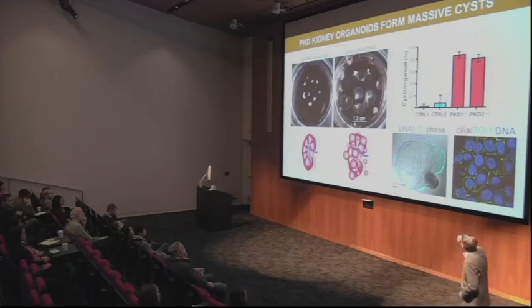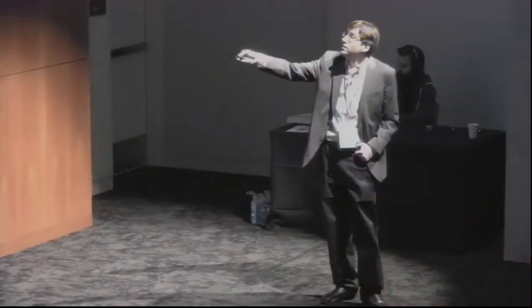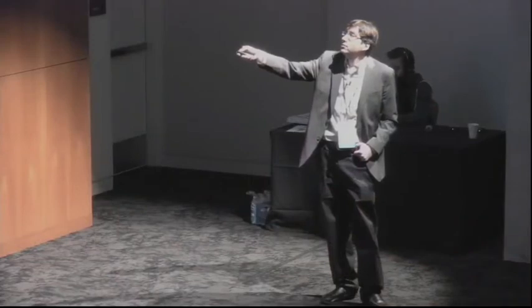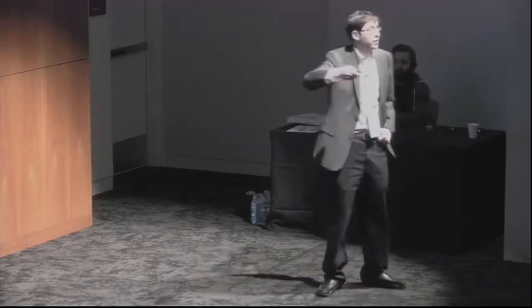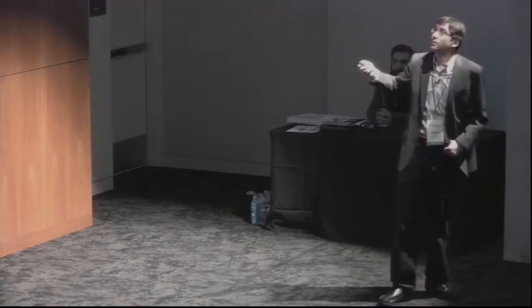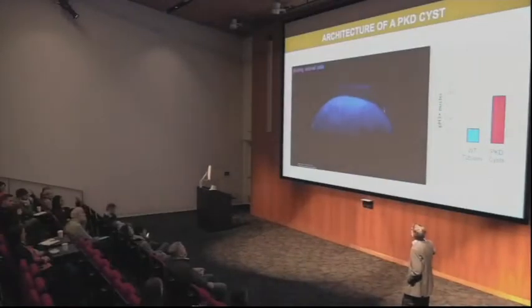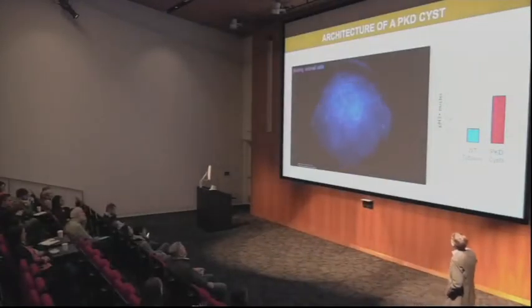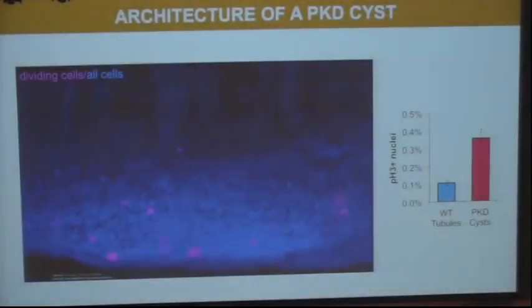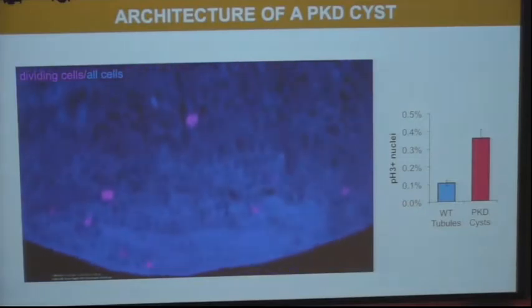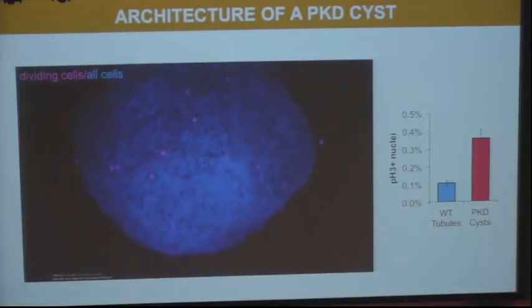Under the microscope, the cysts are LTL-positive, meaning they're derived from proximal tubular epithelial cells. These cysts are comprised of epithelial cells with tight junctions and primary cilia — the site of action for these proteins. We've now been able not only to reconstitute organoids, but actually reconstitute disease. Looking at proliferation, there are many dividing cells in the cysts, and this is significantly stronger in the PKD lines versus wild-type tubules.